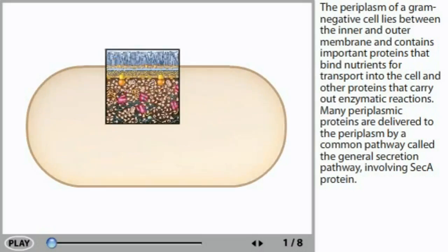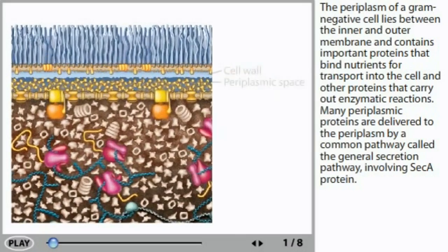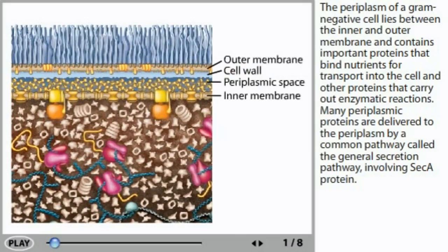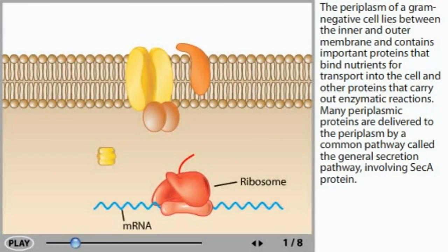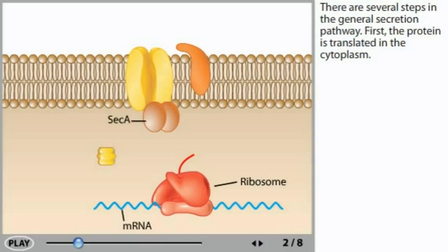The periplasm of a gram-negative cell lies between the inner and outer membrane and contains important proteins that bind nutrients for transport into the cell and other proteins that carry out enzymatic reactions. Many periplasmic proteins are delivered to the periplasm by a common pathway called the general secretion pathway, involving SecA protein. There are several steps in the general secretion pathway.